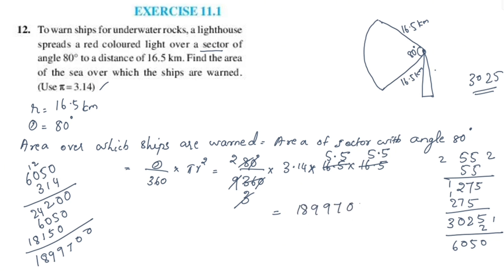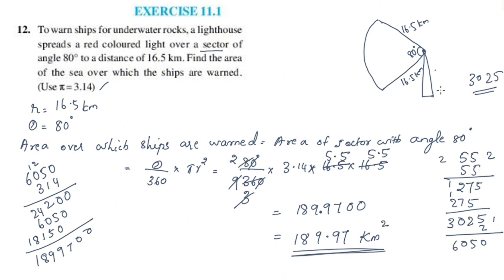The decimal point is placed 2 places from the right, giving 189.97 square kilometers. So the area of the sea over which ships are warned is approximately 189.97 km².